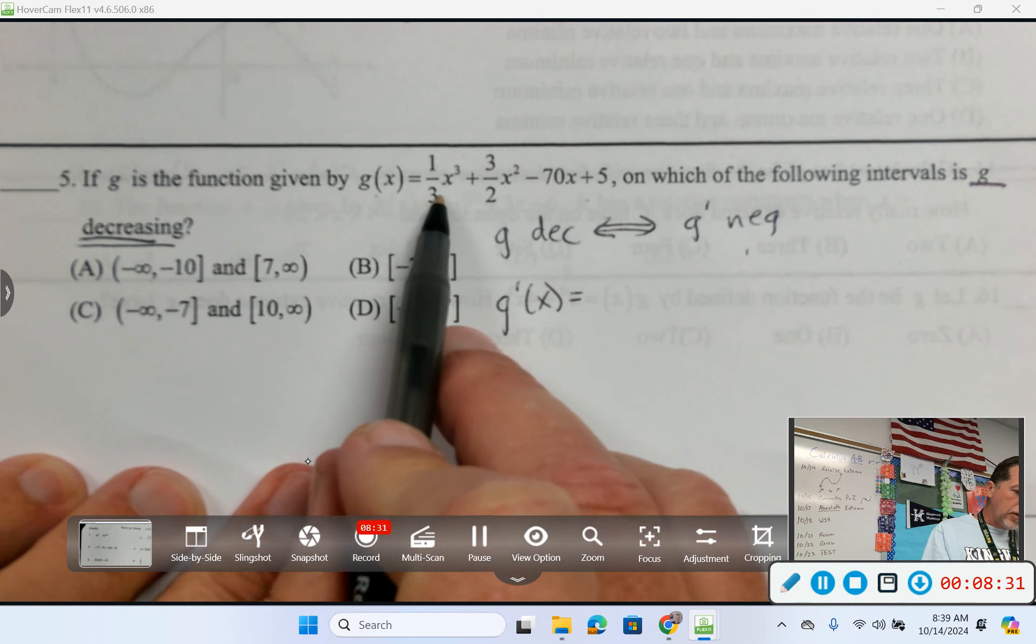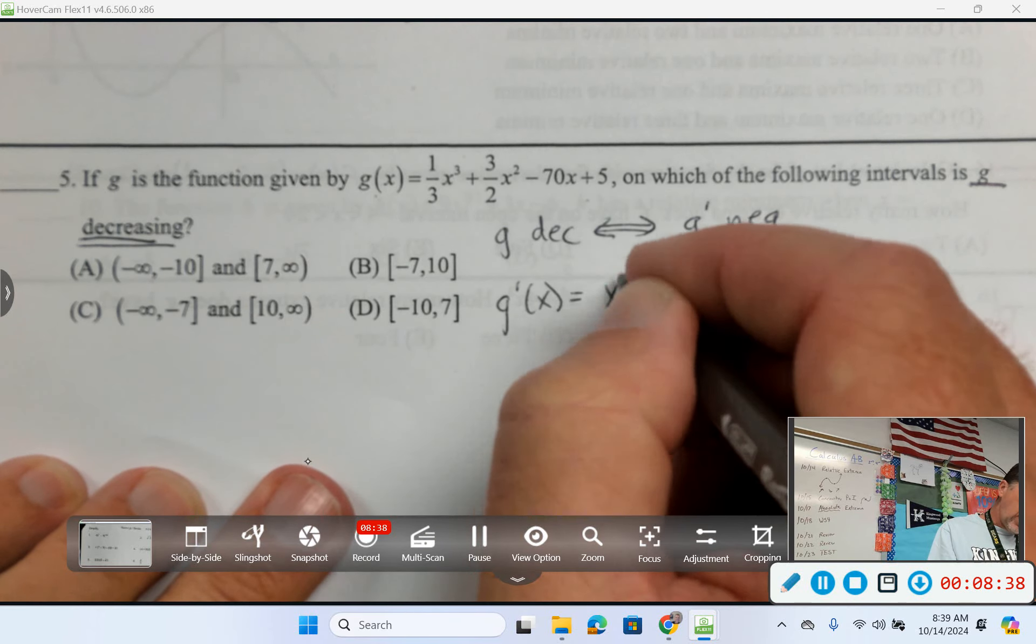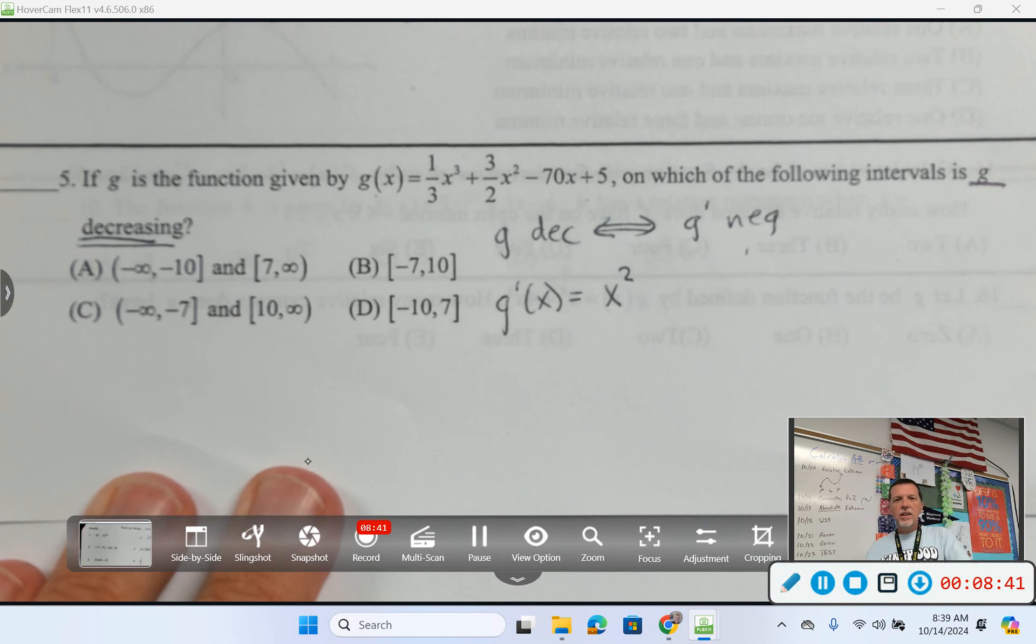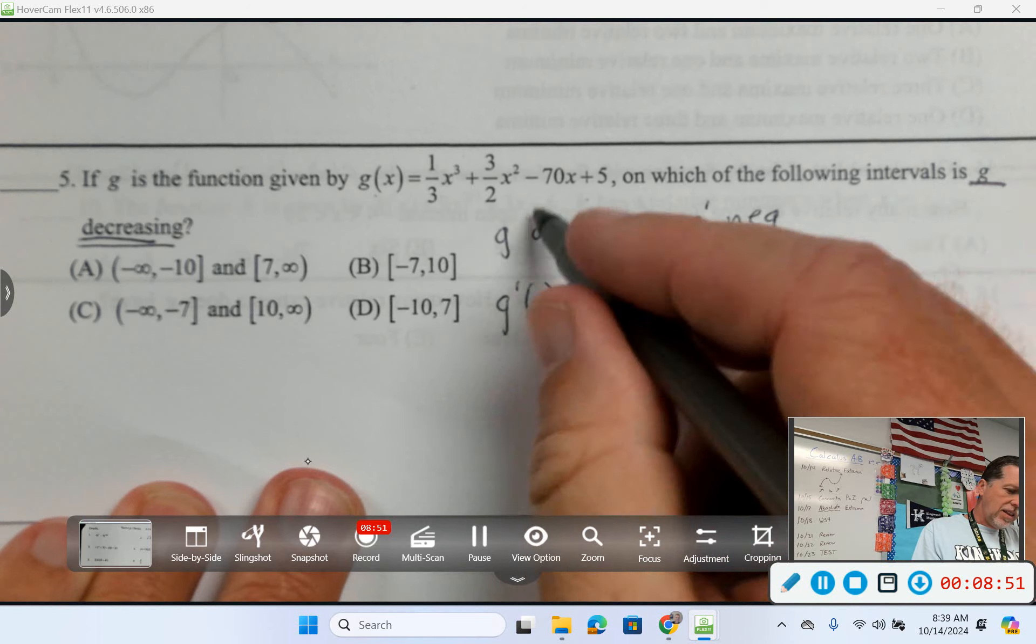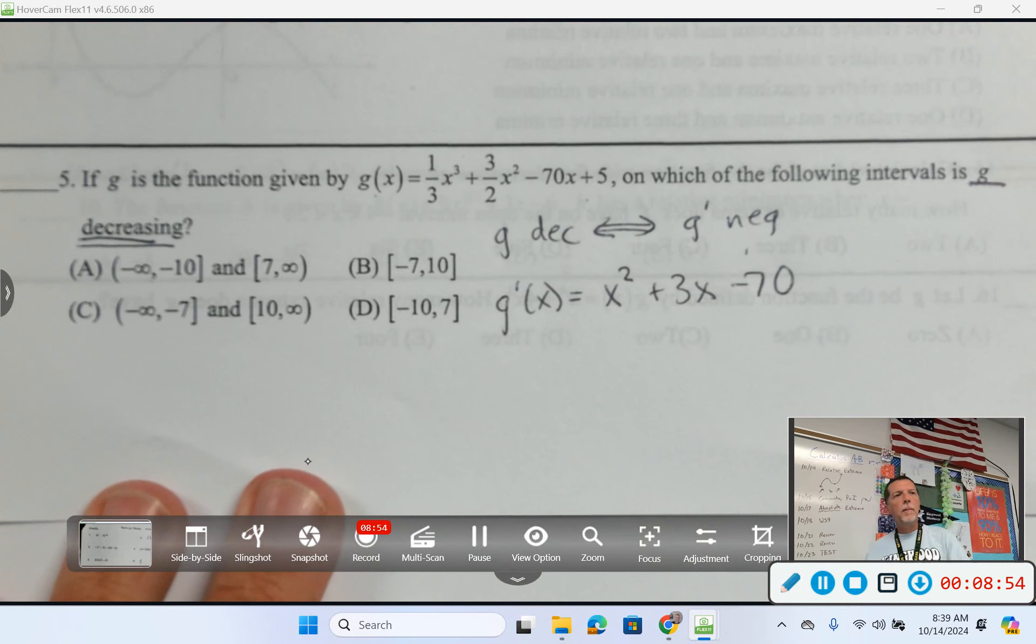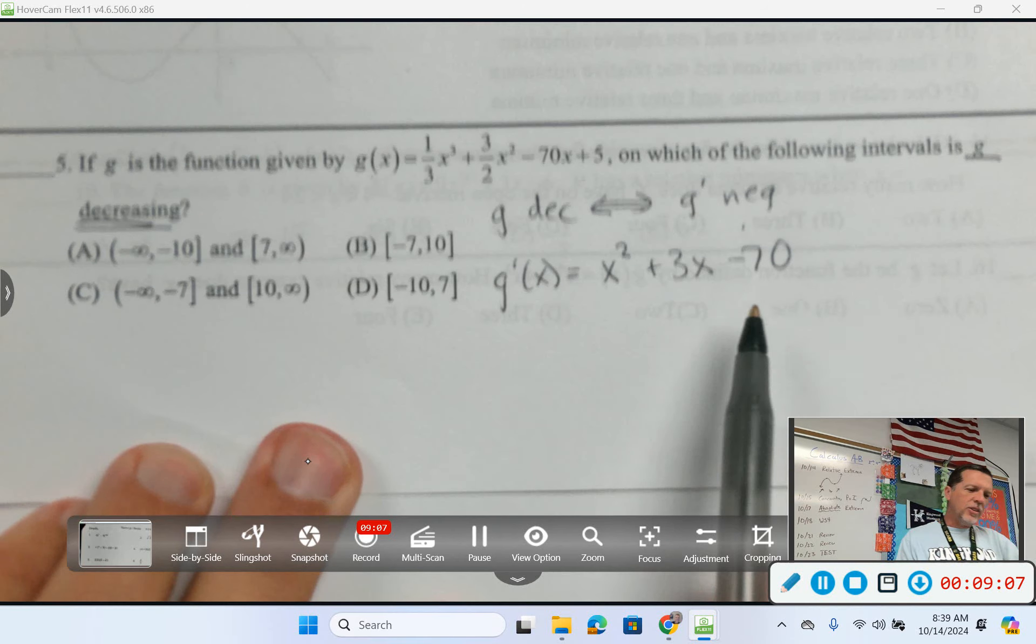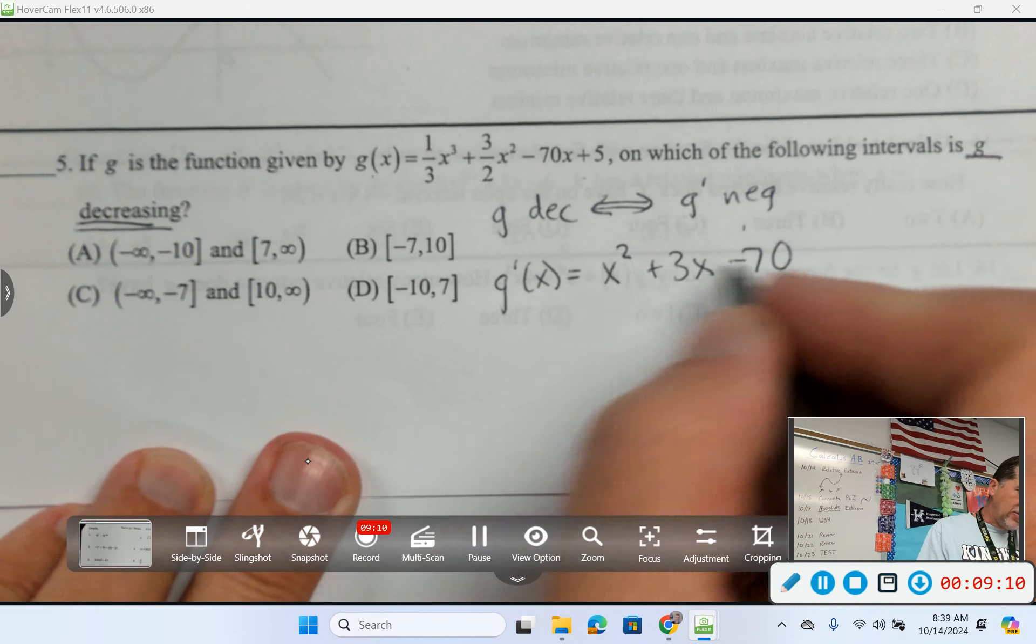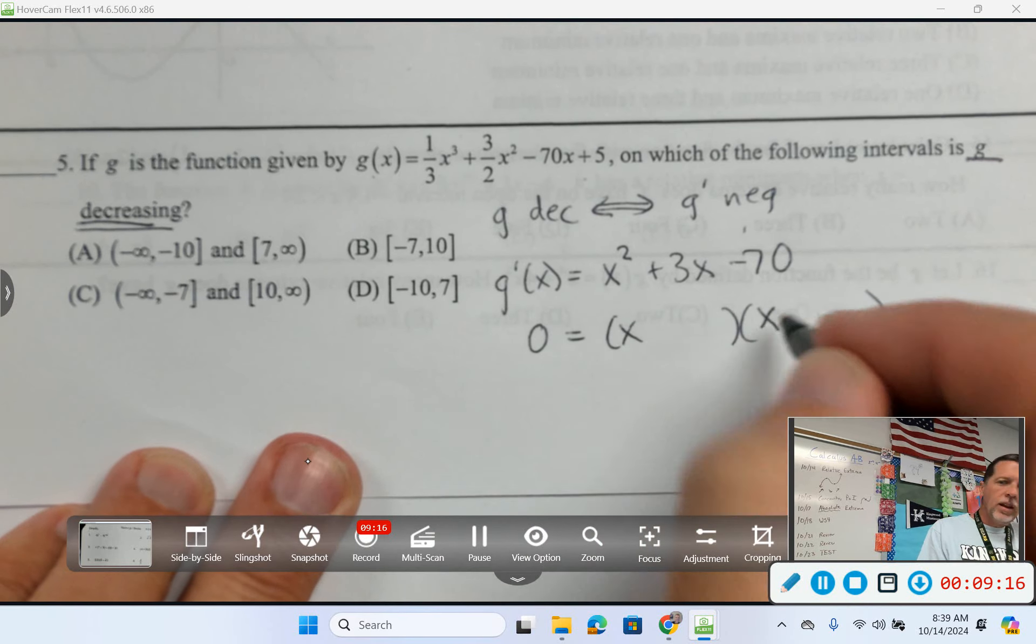Those mean the same thing. If g prime is negative, g is decreasing. If g is decreasing, g prime is negative. So I can't look at that and tell much of anything, but if I take a derivative, then I can figure out where the derivative is negative. And let's see, it looks like they've done us a small favor here. The derivative of one-third x cubed would be x squared. The derivative of three-halves x squared would be 3x, and then minus 70, and then the five would go away. So that wasn't, like the derivative was nicer than the original. It kind of rigged the problem for us. I still want to know where that's negative now. I don't know where it's negative, but I can figure out where it's zero.